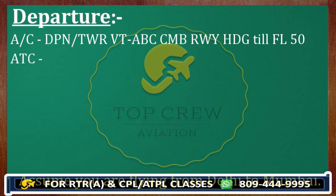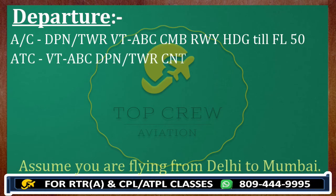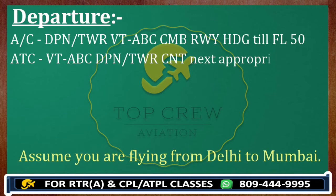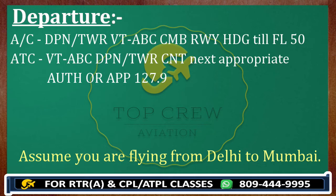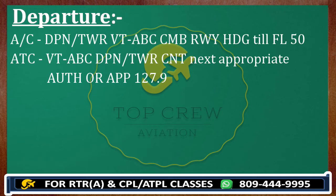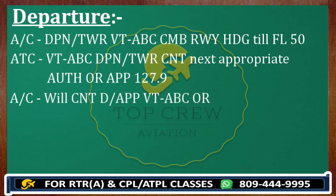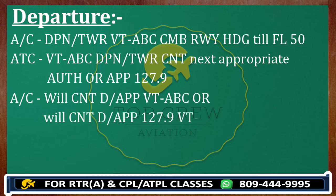ATC is going to respond: Victor Tango Foxtrot Bravo Charlie, this is Delhi Tower — contact next appropriate authority. Or ATC can tell you: contact approach on 127.9. This is how you comply. The authority of Delhi Tower is till flight level 50; after that you have to contact approach. That's why he is transferring you to the next authority. You revert: will contact Delhi approach, Victor Tango Foxtrot Bravo Charlie — or: will contact Delhi approach on 127.9.